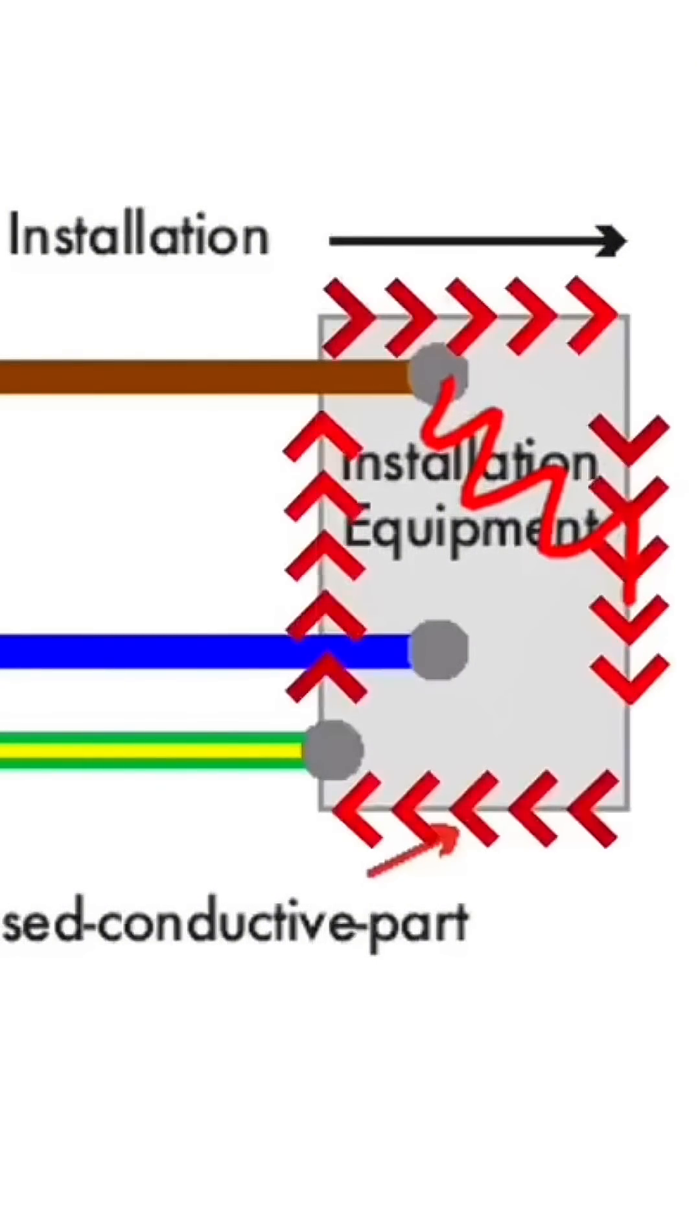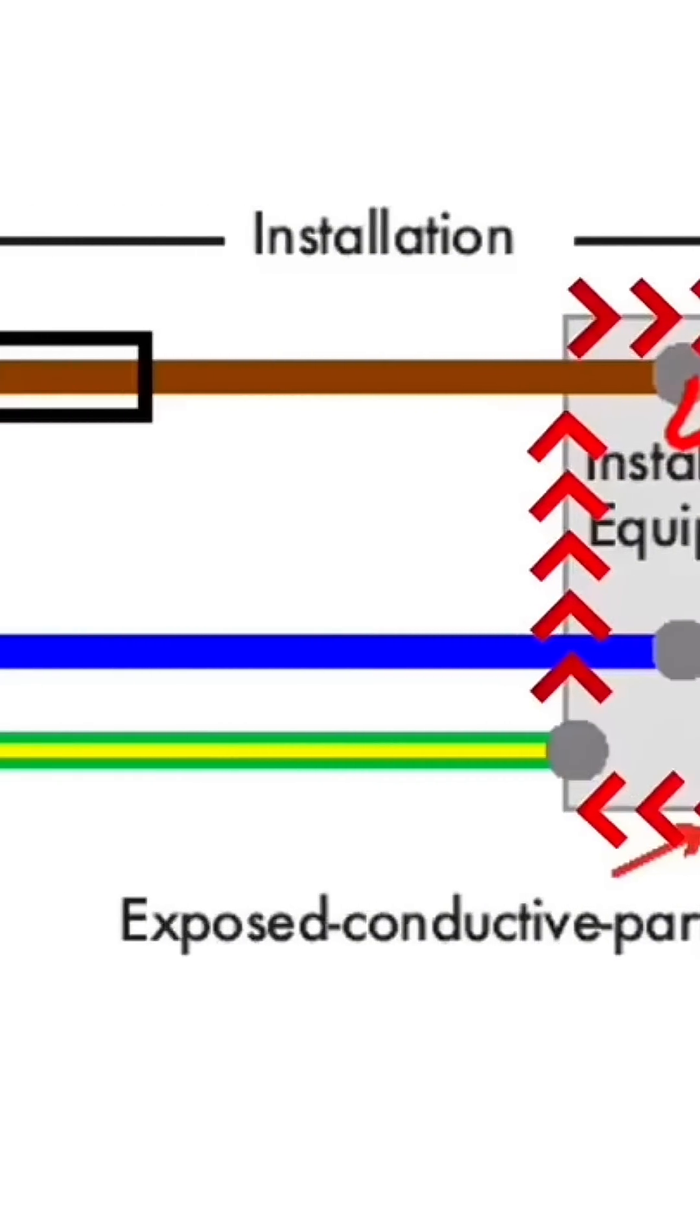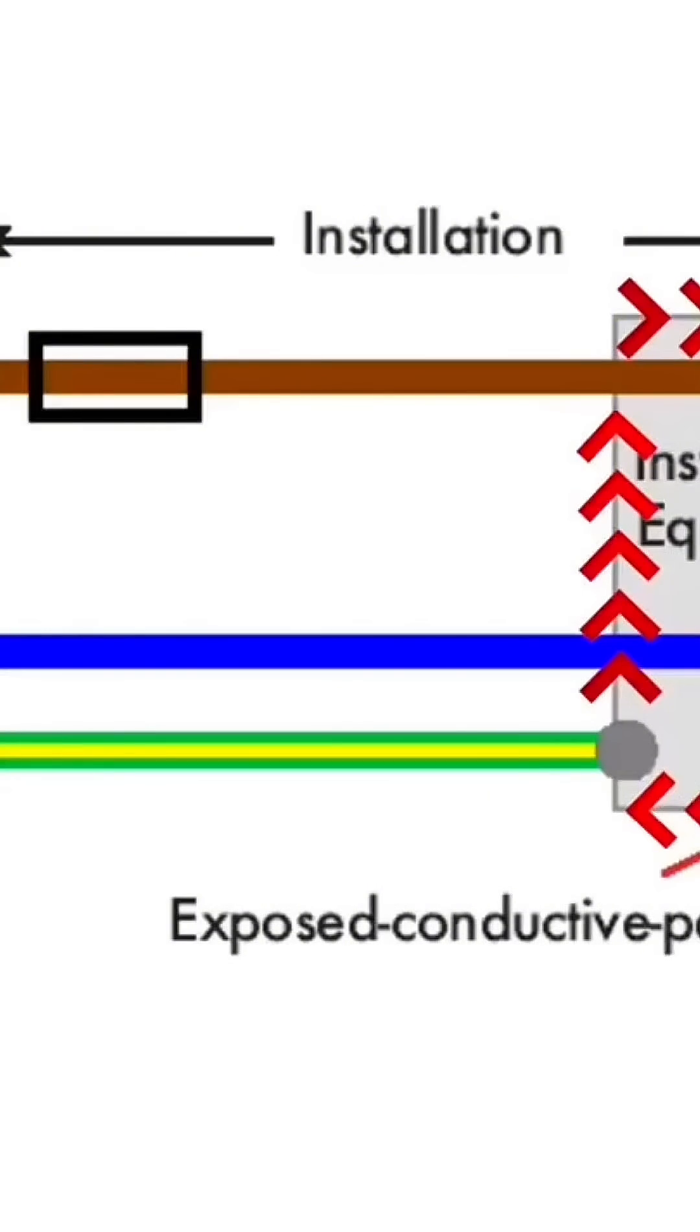The exposed conductive part would become live. This is connected to the circuit protective conductor, the CPC. This would become live.